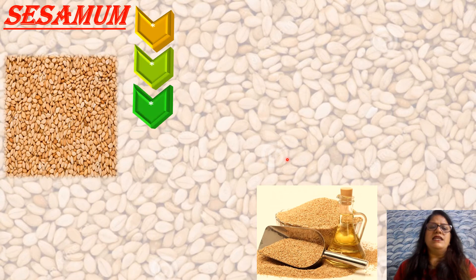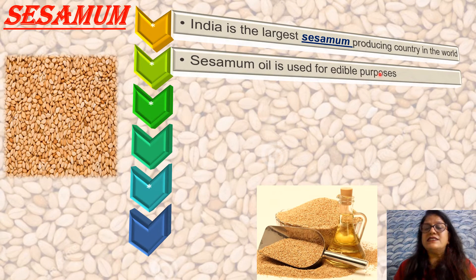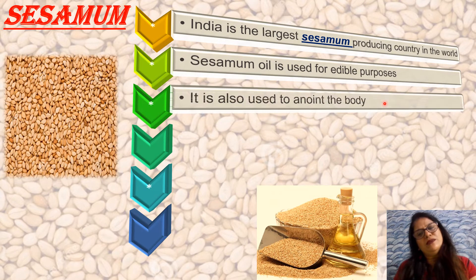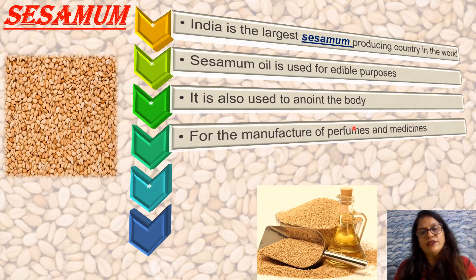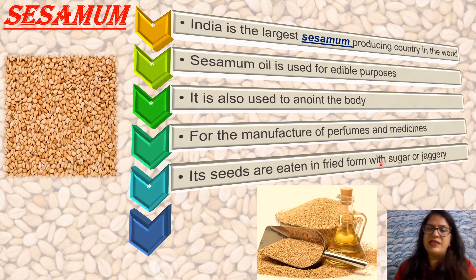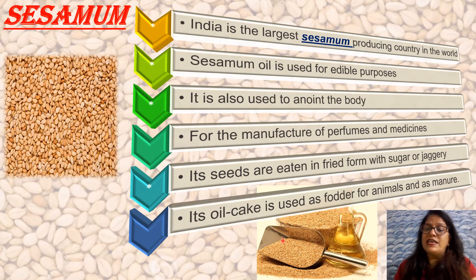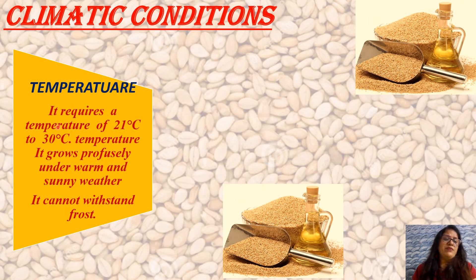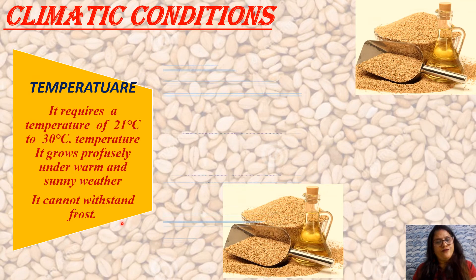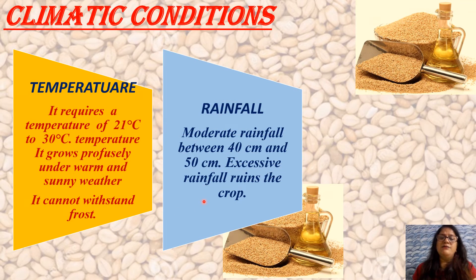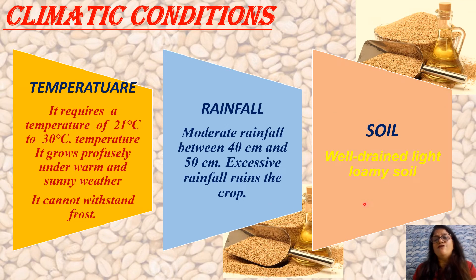Now we will learn about sesame seeds. India is the largest sesame-producing country in the world. This oil is used for edible purposes and also to anoint the body and for manufacturing perfumes and medicines. The seeds are eaten in fried form with sugar or jaggery, and the oil cake is used as fodder for animals and as manure. Climatic condition: it requires a temperature of 21°C to 30°C, grows profusely under warm and sunny weather, and cannot withstand frost. Moderate rainfall between 40 to 50 centimeters is required; excessive rainfall ruins the crop.